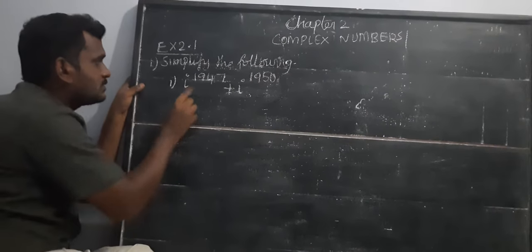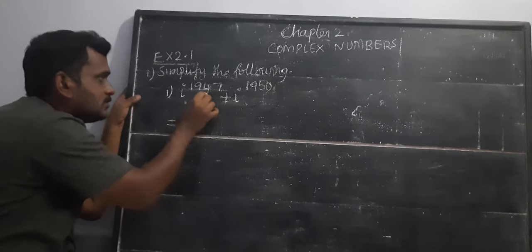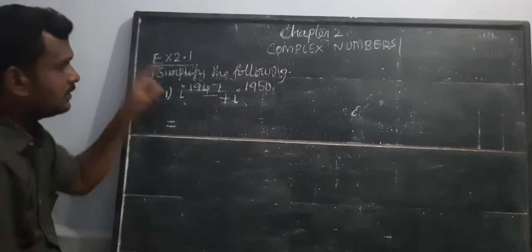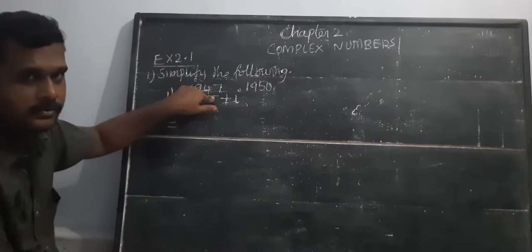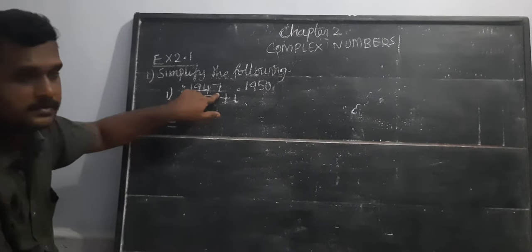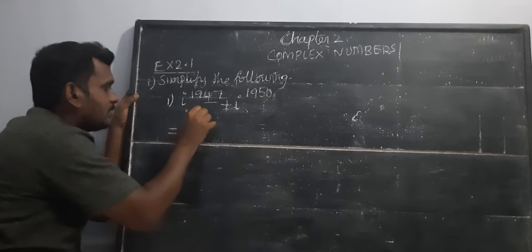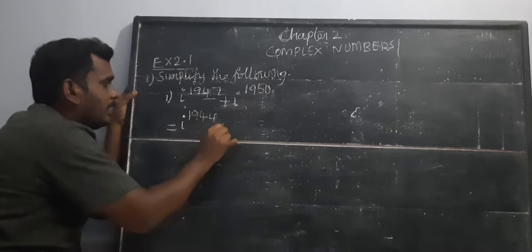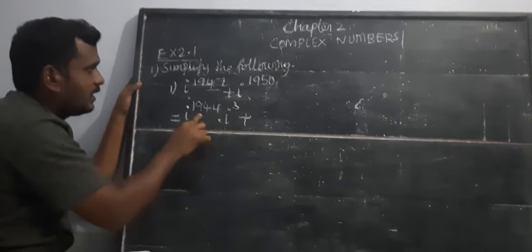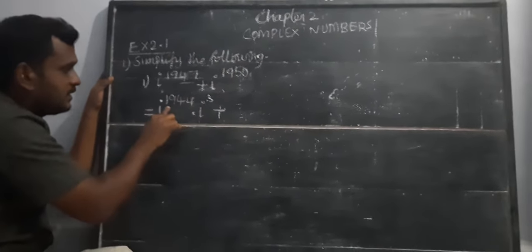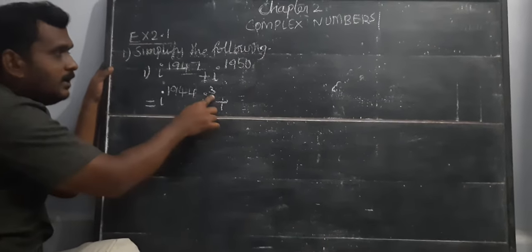First we need to see how many fours are there in 47 — the last two digits. 10 fours are 40, 11 fours are 44, 12 fours are 48 — 48 is not possible. So we take 11 fours are 44. Therefore i power 1944 times i cubed. I have divided i power 1947 as i power 1944 times i cubed, because when bases are equal the powers are added.